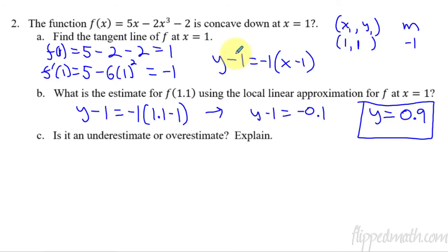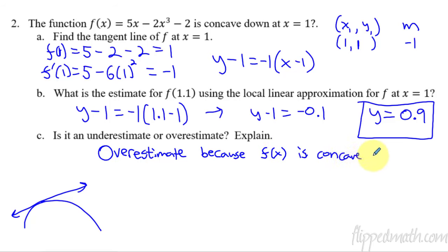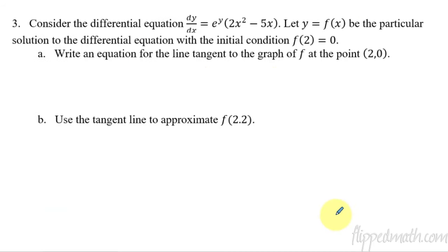So 0.9 is my estimate of the actual function at x = 1.1. We could plug 1.1 into the original function to check, but the point here is to see how the tangent line gives us an approximation. Since the function is concave down, the tangent line lies above the function, so this is an overestimate. Justification: overestimate because f(x) is concave down. That's your explanation.